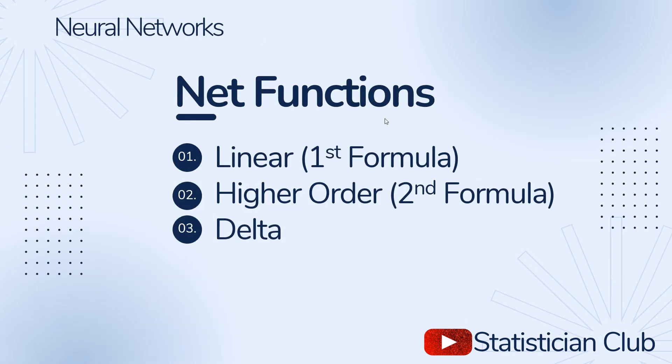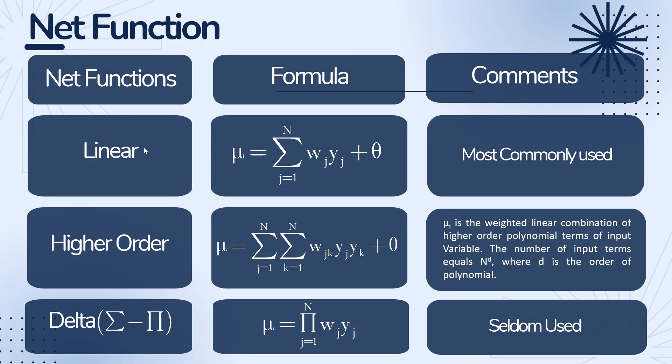Net function consists of three formulas. One is linear, this is the most commonly used net function. Other is higher order and third is delta. What is linear function? We mostly represent linear function by mu and w represents weights.